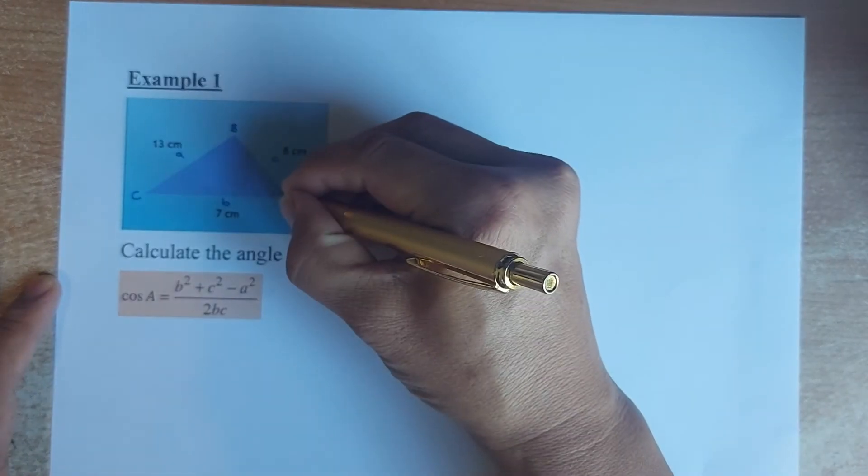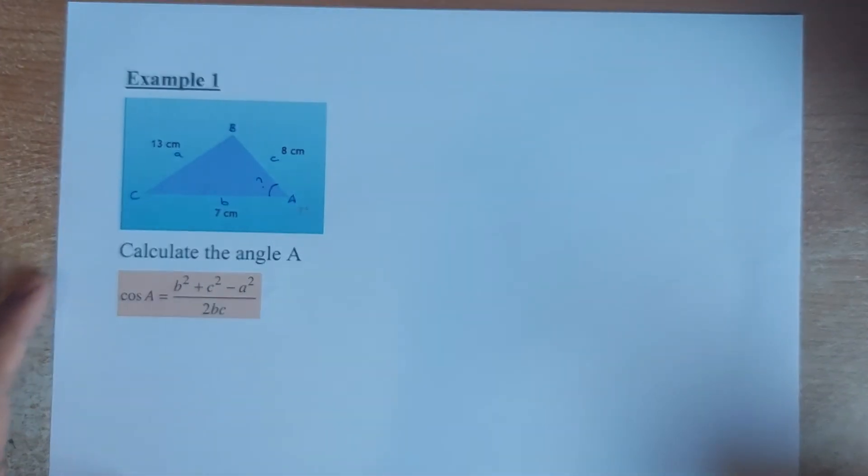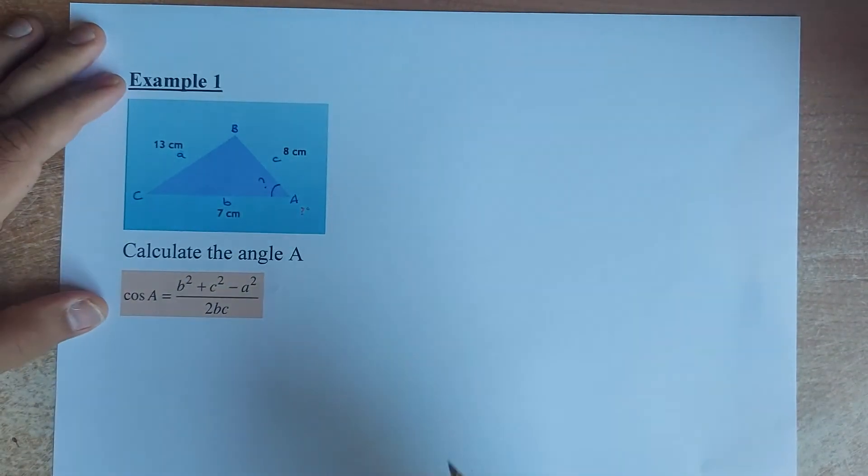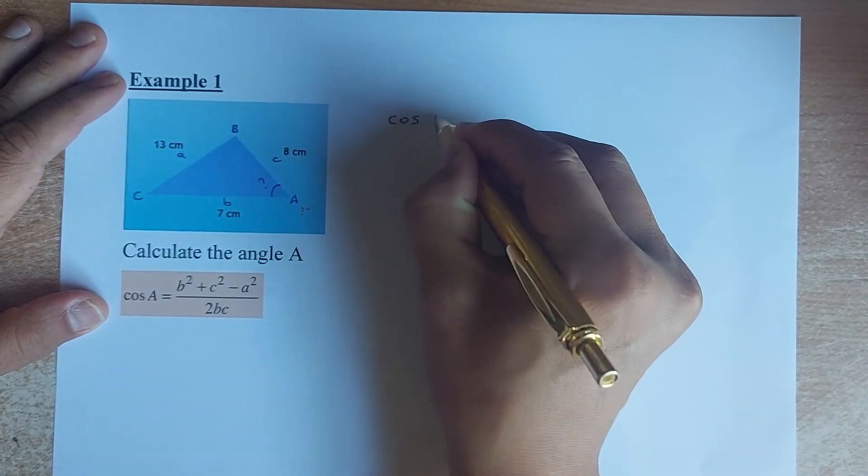We are looking at finding angle A, which is what we want to find. So to do that, once you have that in place, we are just going to substitute. So instead of cos A, we are going to calculate cos A. That is what we are going to find.